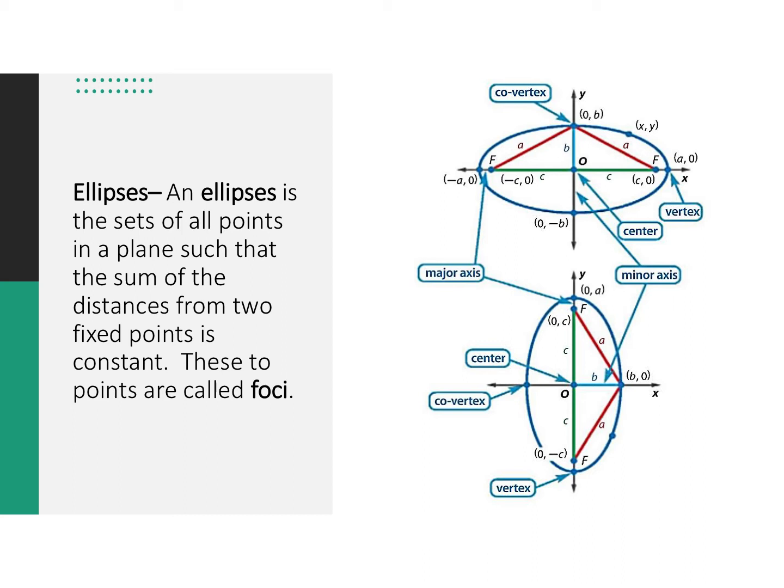Also, what to know is we have something called a co-vertex and a vertex. We call the ones with the major axis vertices. And the co-vertex or co-vertices are the ones on the minor axis or the shorter ones.